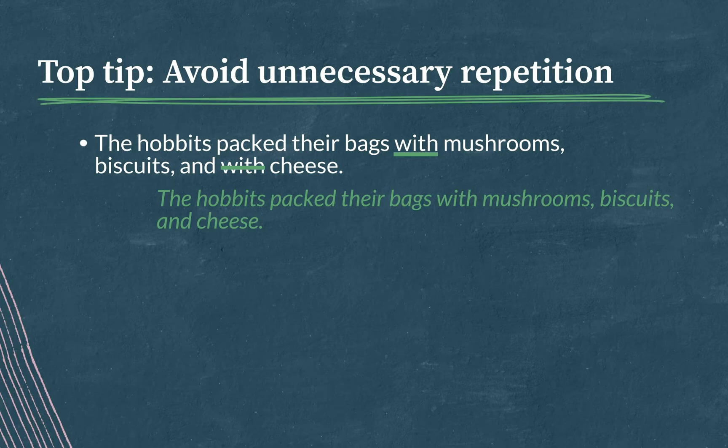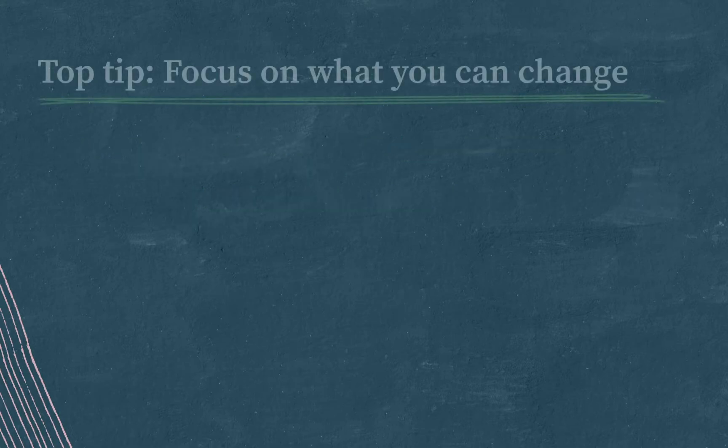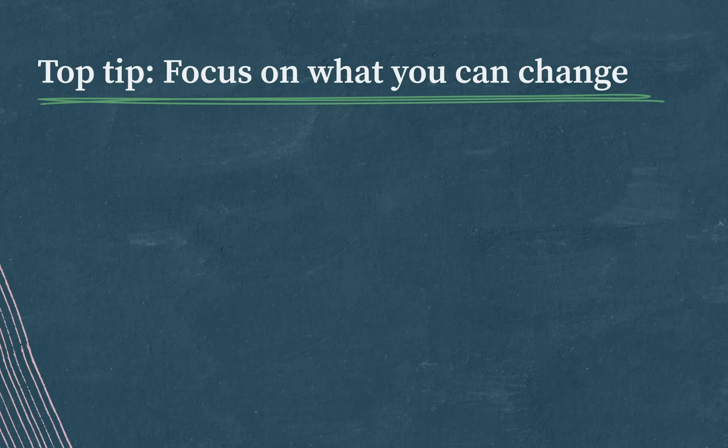Our final top tip is to focus on what you can change. Parallel structure questions will underline only part of a sentence. Your job is to match the parts of the sentence you can change, the underlined part, to the parts of the sentence you cannot change. That sounds simple enough, but it's easy to get lost in the weeds with questions like these.